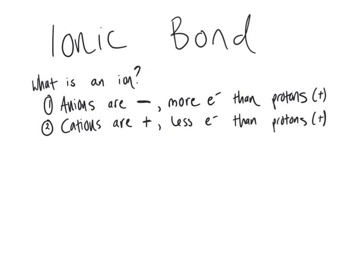So how does this create a bond? In chemistry we know that opposites attract, so ionic bonds are formed between an anion and a cation that are attracted to each other because of their opposite charges — and that forms an ionic bond.